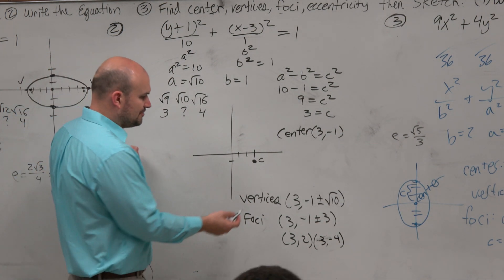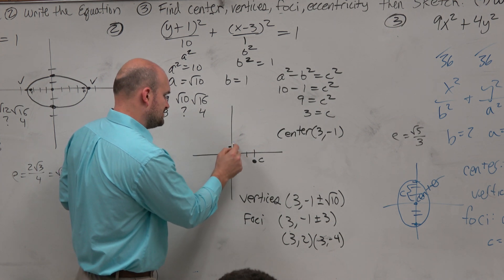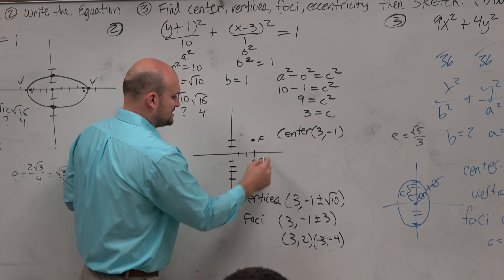Follow? Yes. Now we can plot those points since I asked you to sketch the graph. So 3, 2 would be 3 up to negative 4, 1, 2, 3, 4.